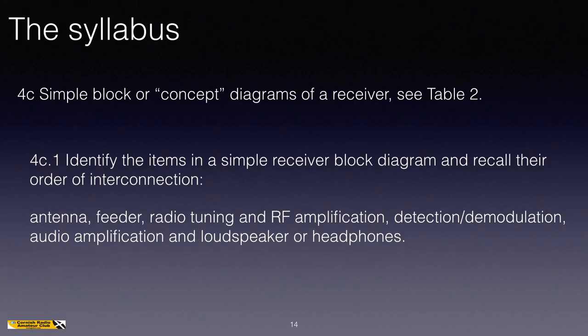Identify the items in a simple receiver block diagram and recall their order of interconnection. Many of the questions in the exam will label two out of the three blocks and ask what the third block is. So the order was antenna, feeder, radio tuning and RF amplification, detection demodulation, audio amplification, and loudspeaker or headphones. Apart from the three main blocks, you also need to realise that there is an antenna and a feeder feeding the signal into the radio, and a loudspeaker or headphones replaying the audio.